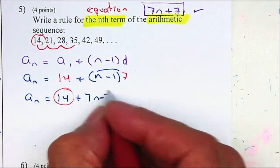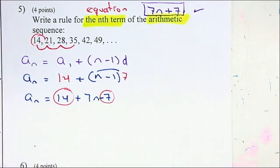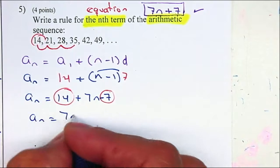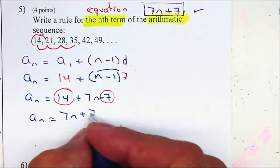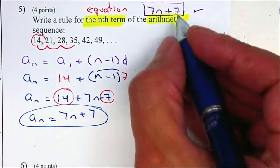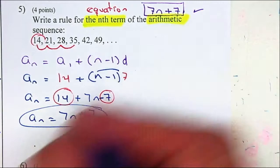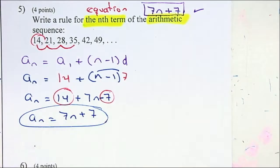So, a sub n is equal to 7n plus 7. And it's exactly what we found before. Remember, I do need you guys to go through the formula on this problem.